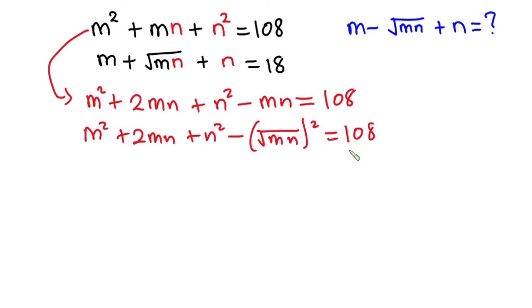From algebraic identities, if you have a plus b all squared, this is the same as a squared plus 2ab plus b squared. So relating this one to this, I can write this whole expression as m plus n all squared, then minus the square root of mn all squared, and this equals 108.